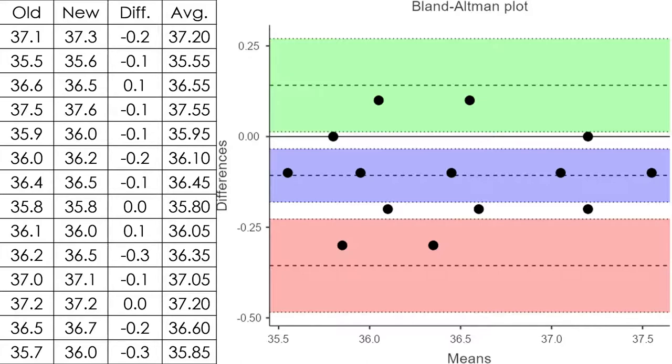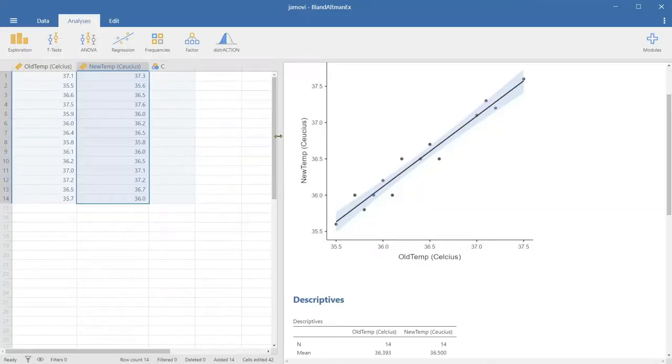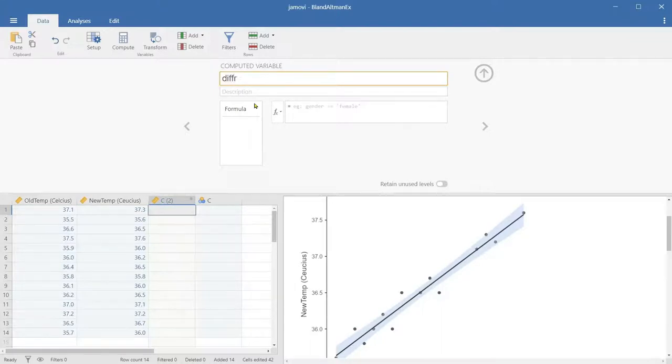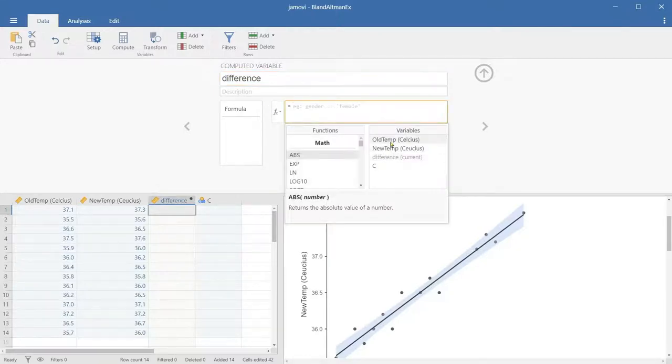Instead, Bland and Altman in 1983 suggested to use a different type of scatterplot, where x-axis represents the mean of the measurements from each method, and the y-axis shows the difference values between the measurements. Let's calculate those differences and average score and do a scatterplot on Jamovi. It's easy to calculate the columns of difference and average using the compute function. The difference is simply the difference between old temperature and new temperature.